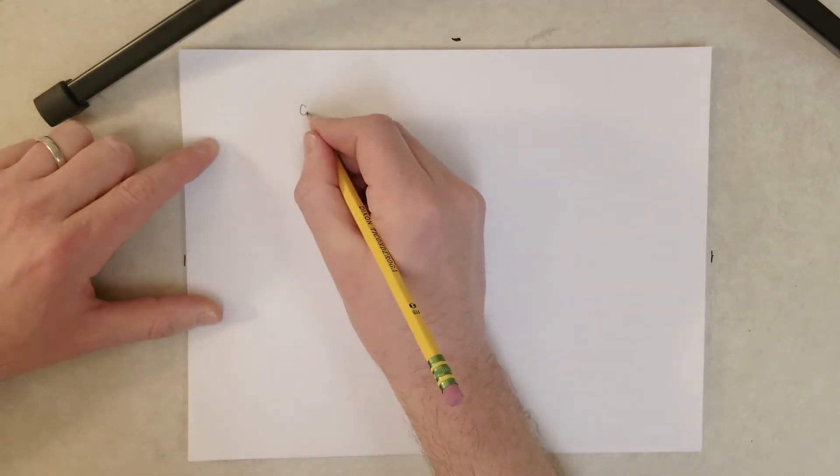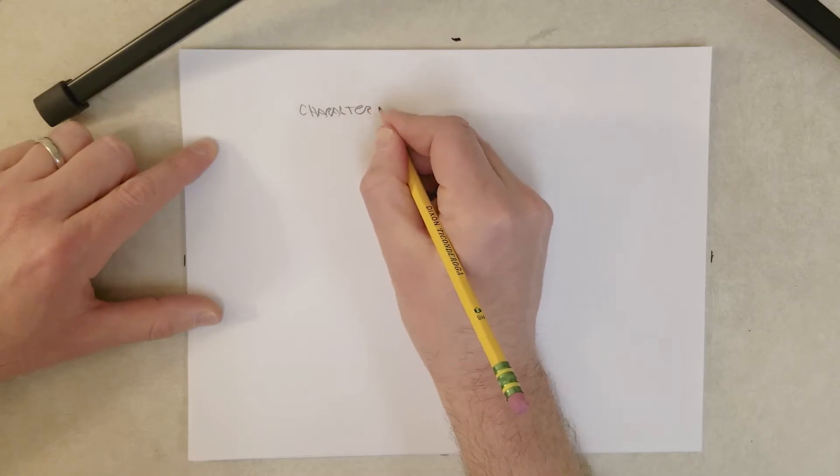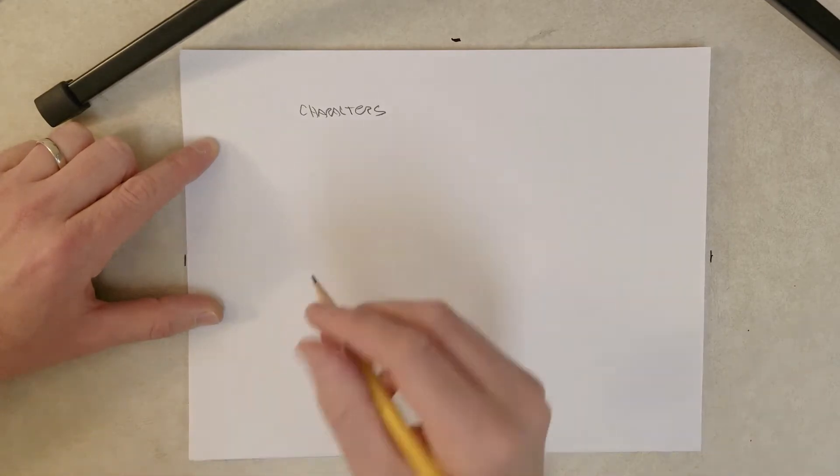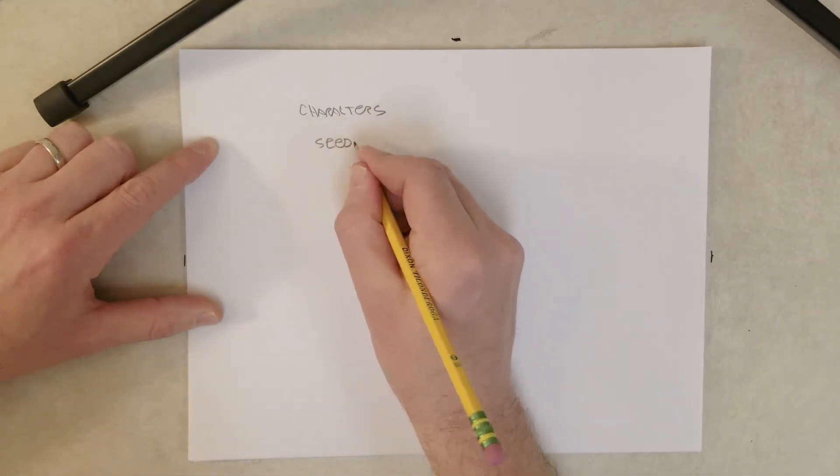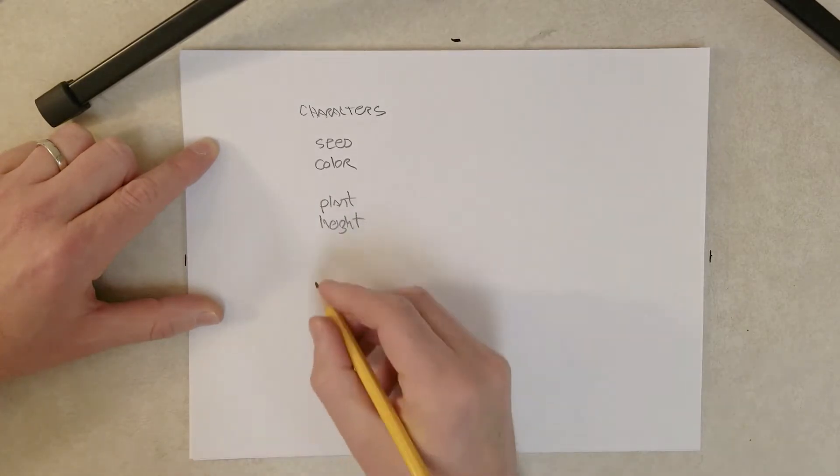Before we get started looking at his crosses, we need to address a couple things. So he studied characters, or characteristics, we'll call them characters, in the pea plant. Seven different characters, we will talk about three. These include seed color, plant height, and seed shape.